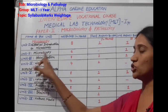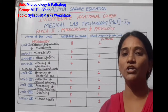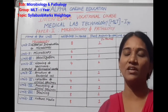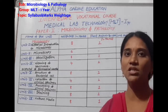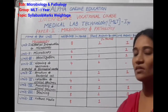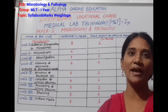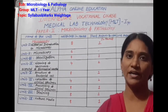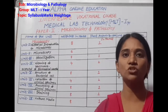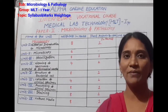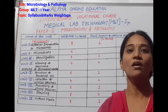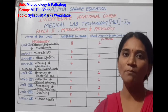The second unit is Microscopy. Here we have different types of microscopes. Microscopy is useful for the identification of microorganisms.